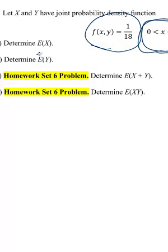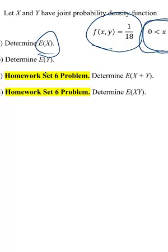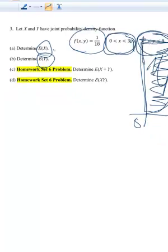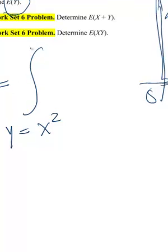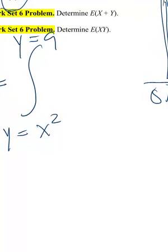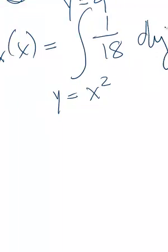To find the expected value of x, I'm going to get the marginal of x, and then I can get the marginal of y to find the expected value of y. I'd rather just find f(x) and then find the expected value of x. These two are on homework set 6. So f(x) equals the integral over my y's — for any x, y goes from x squared to 9 — of (1/18) dy.